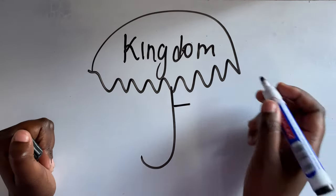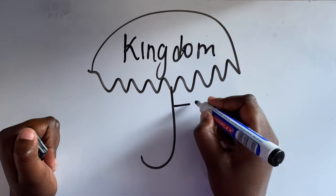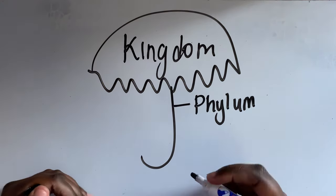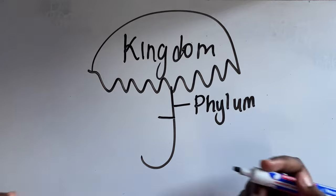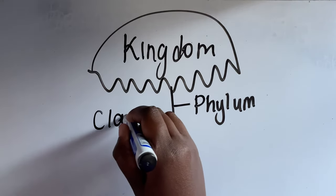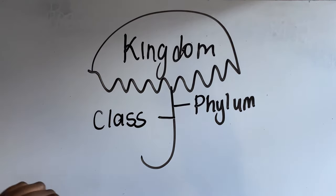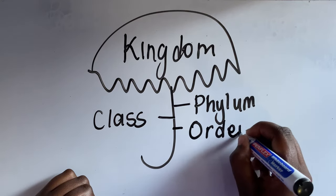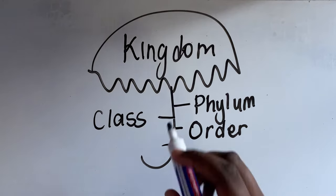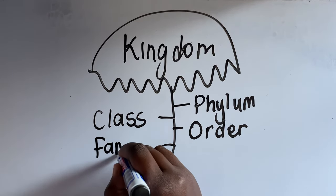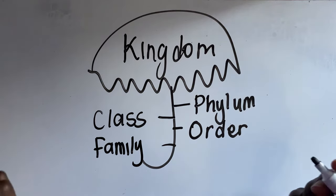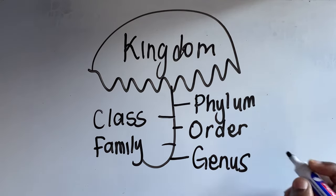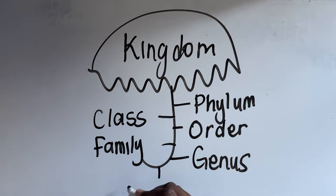The first category under kingdom is phylum. After phylum comes class. After class comes order. After order comes family. After family comes genus. And after genus, you finally get species.